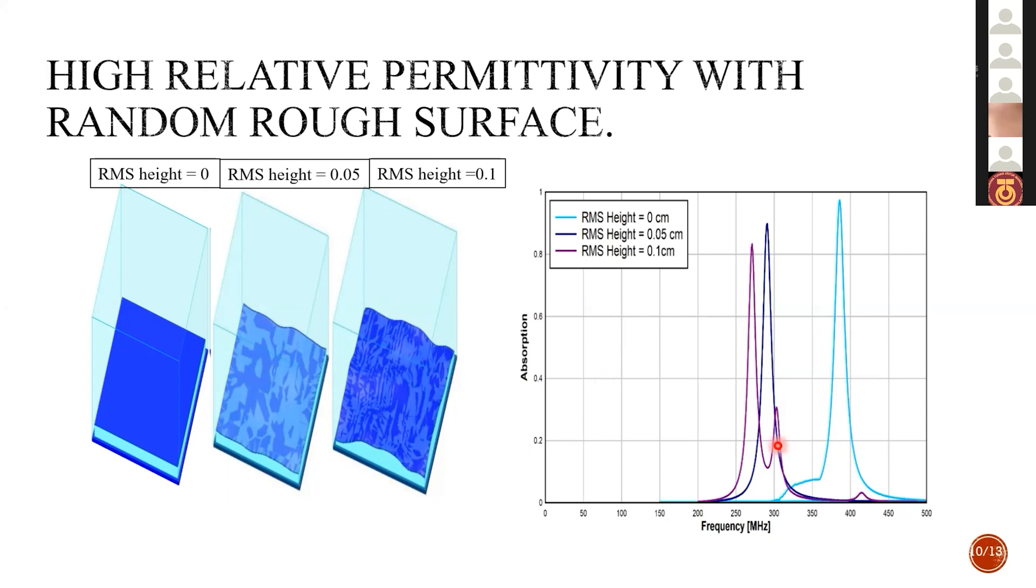So these results prove the efficiency of random rough surface and the efficiency of using minimal surfaces to miniaturize to have a major miniaturized absorber. With a flat surface with RMS height equals zero, the dimension is equal to lambda over 10. Here lambda over 14, and here lambda over 15.